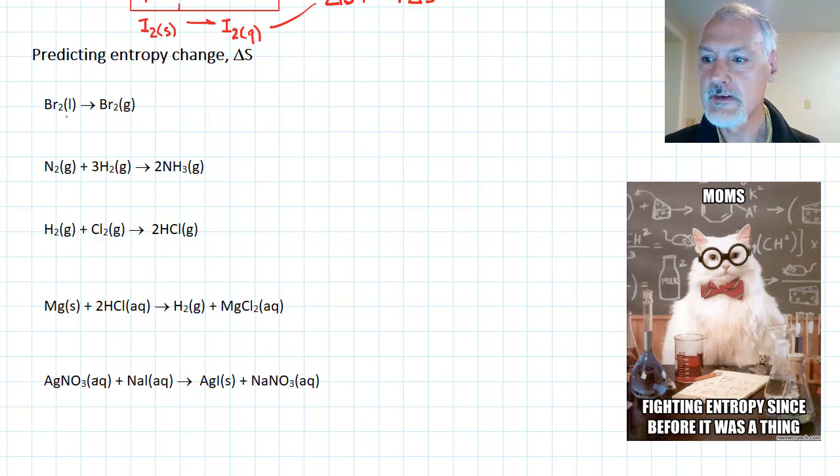So if I am considering bromine liquid to bromine gas, this has a more widespread distribution of energy. So I would say here that the entropy in this system is increasing, or there's been a positive change in entropy.